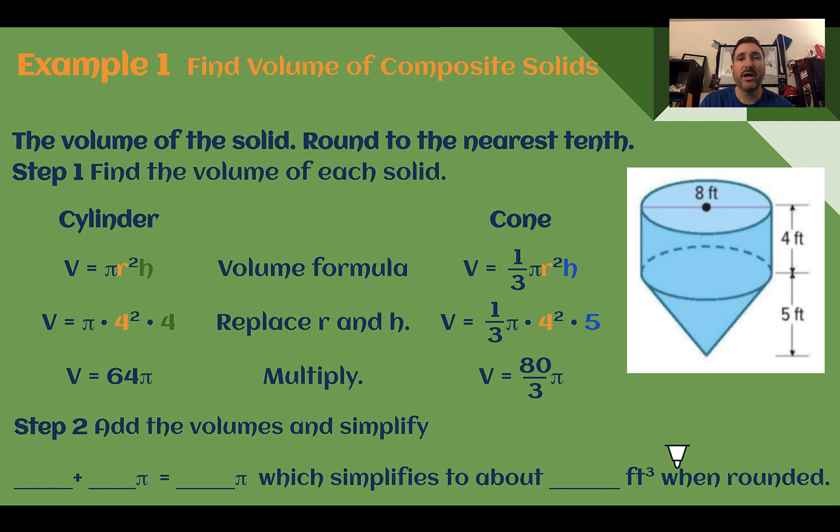Example 1, find the volume of composite solids. Find the volume of the solid, round to the nearest tenth. So let's find the volume of each solid. Here we have a cylinder that's sitting on top of a cone. So let's find the volume of each. For our cylinder, my radius is half of that, so my radius is 4, and my height is also 4. So plugging in 4 for the radius, 4 for the height, calculating it out, 64π is my volume. Again, just leave it in terms of pi for now.